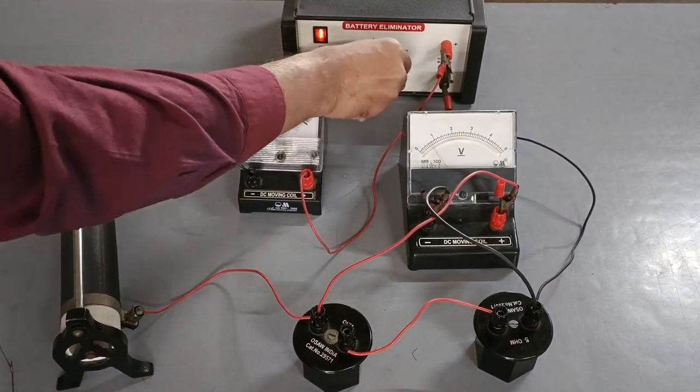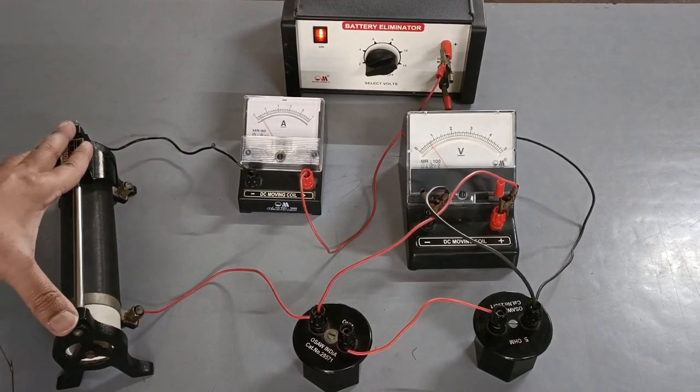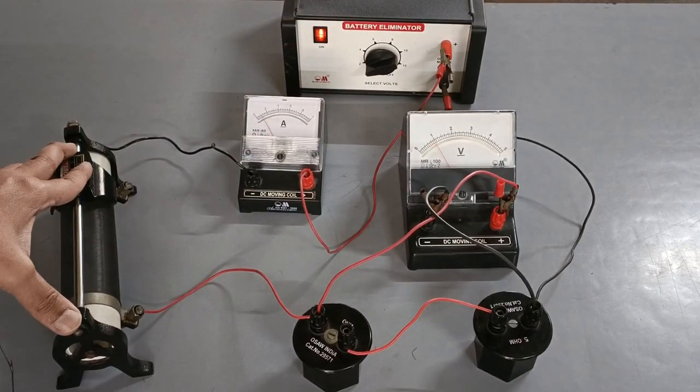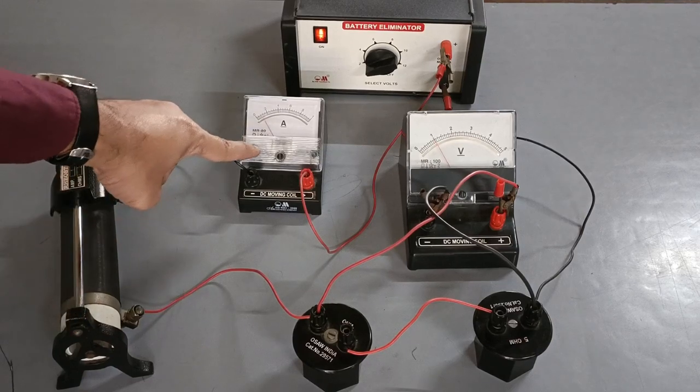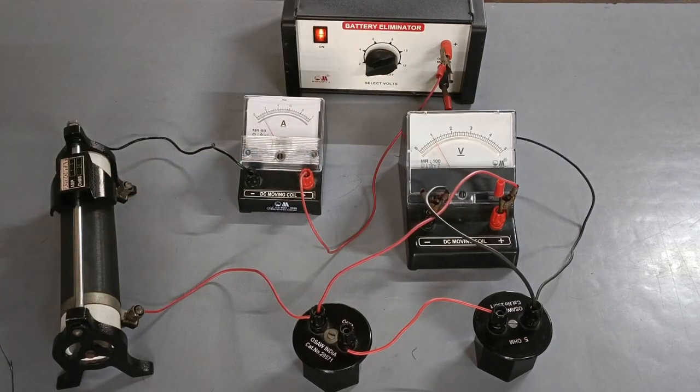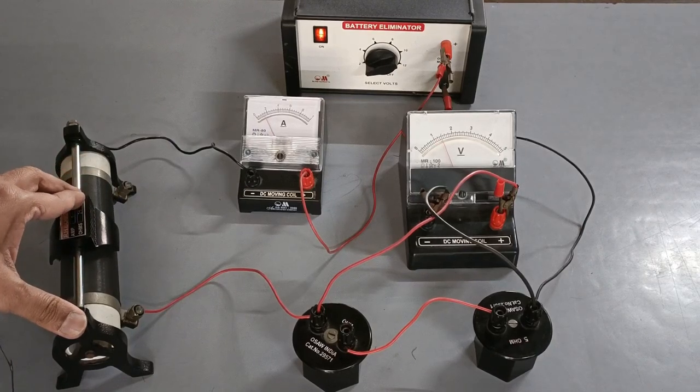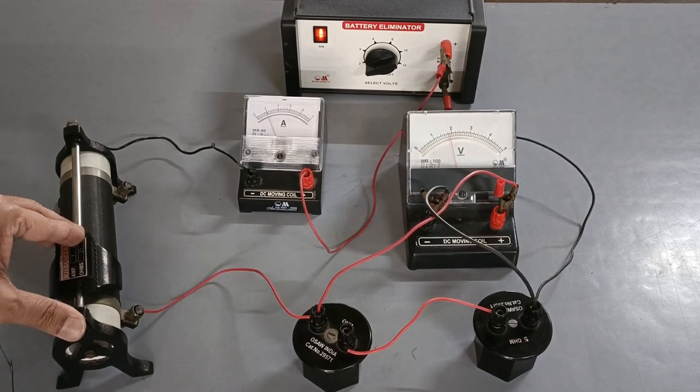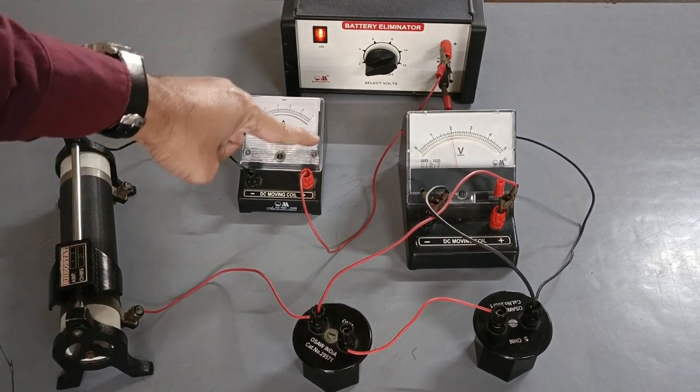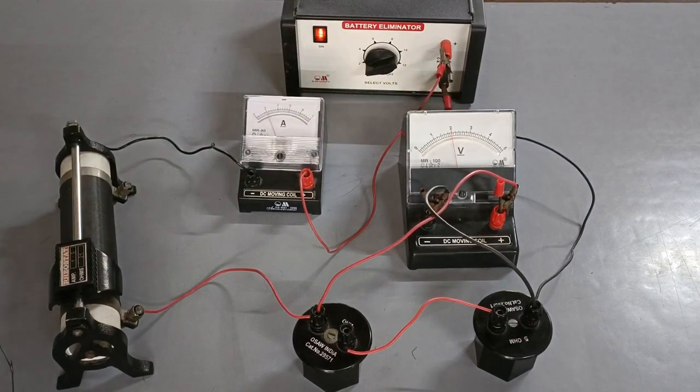Adjusting the battery voltage to 2 volts and sliding the jockey, the current and voltage readings are 0.1 ampere and 1 volt. Current and voltage readings are 0.2 amperes and 2 volts.